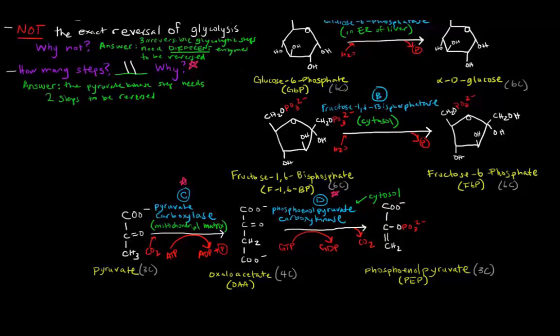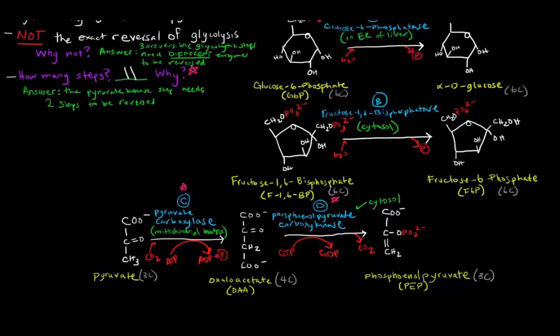In the next video I'll talk about how some of these enzymes are allosterically regulated. But that's essentially it as far as gluconeogenesis goes — every other step was reversible from glycolysis, so you'd just write the arrow in the other direction. I'll show a quick example in another video. Thanks for watching.